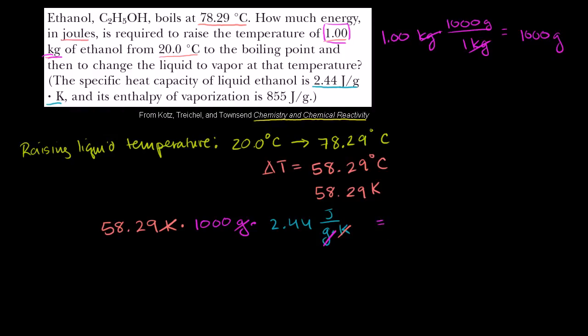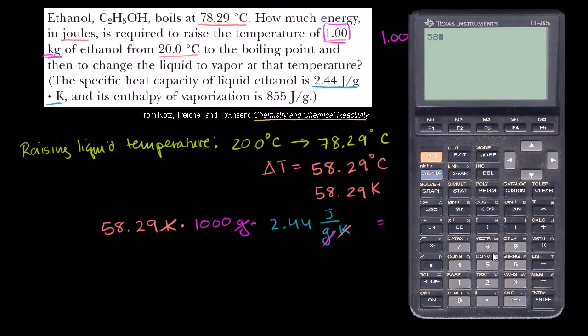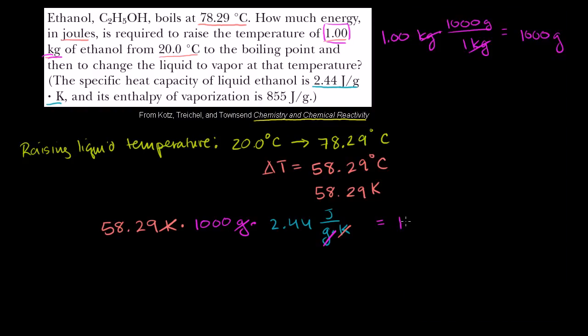Take out the calculator. So we have 58.29 times 1,000 times 2.44 is equal to, and we only have three significant digits here, so this is going to be 142,000 joules. So this is how much, this right here is the amount of energy to take our ethanol.